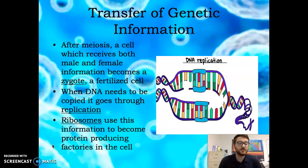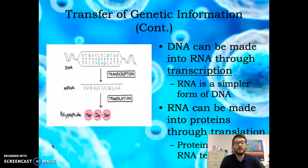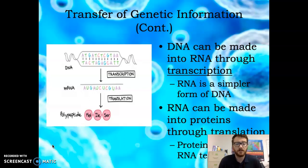Ribosomes use this information to produce proteins in your cell, and these proteins do lots of different jobs. Transcription is where DNA is made into RNA. RNA is a very simple version of the code, and RNA changes this into proteins through translation.